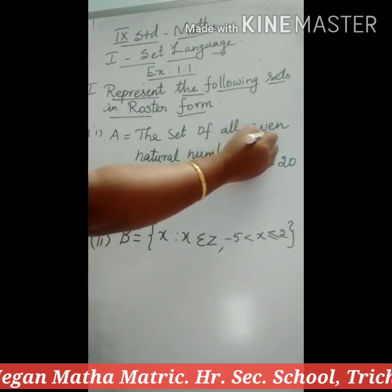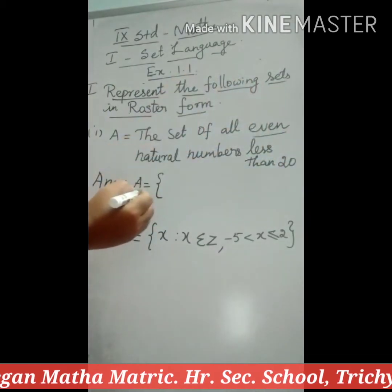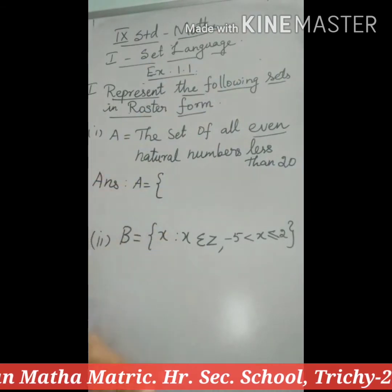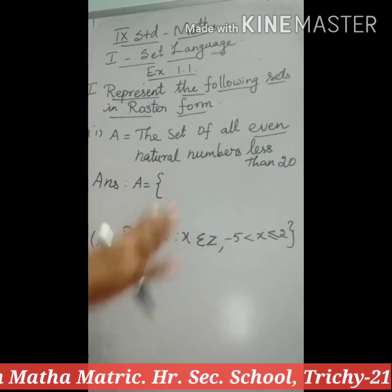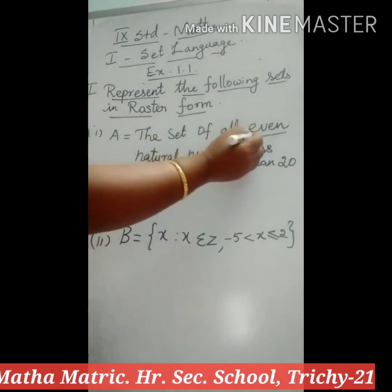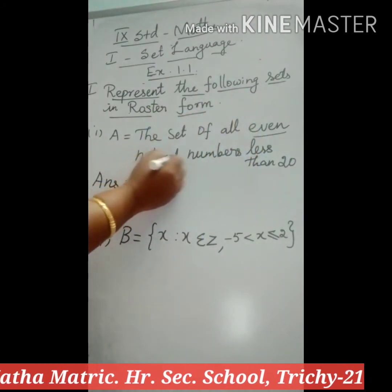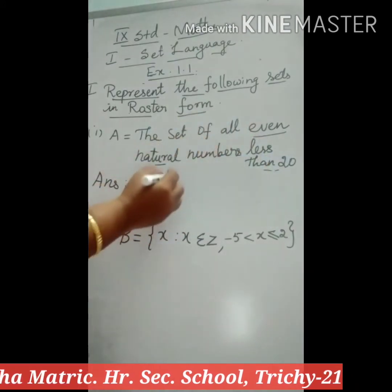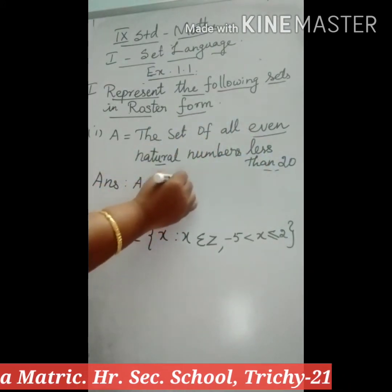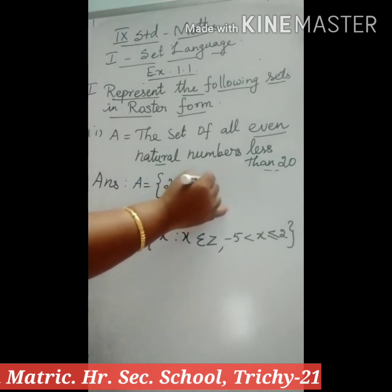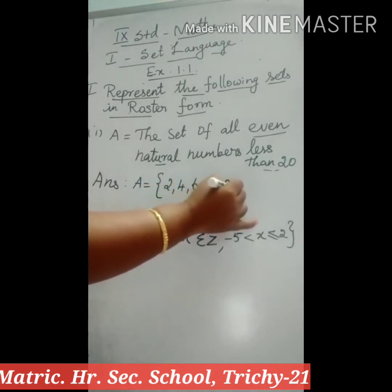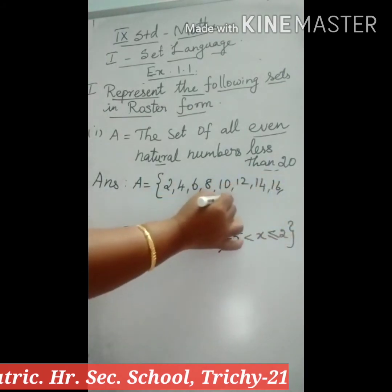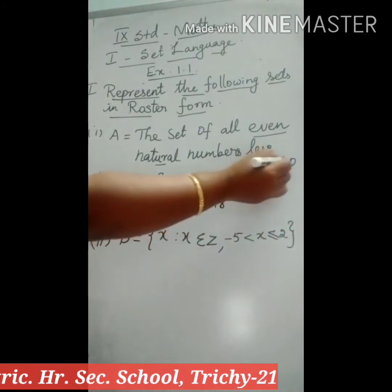One more condition is given — even numbers. What are even numbers? 2, 4, 6, 8, and so on are called even numbers. So you have to write the even natural numbers less than 20 according to these three conditions: even, natural, and less than 20. So we write 2, 4, 6, 8, 10, 12, 14, 16, 18 — less than 20.